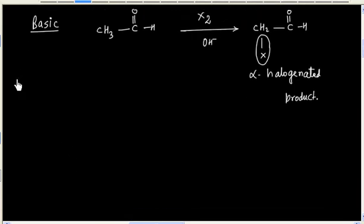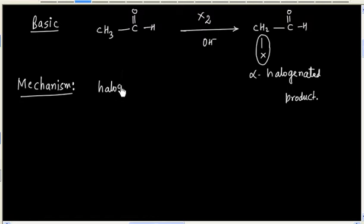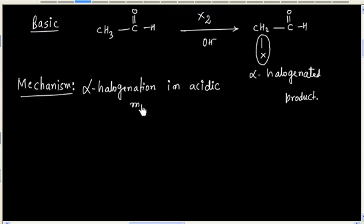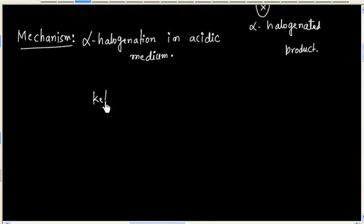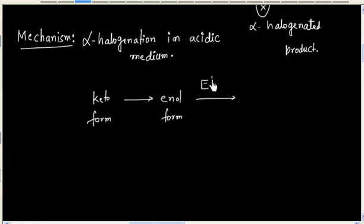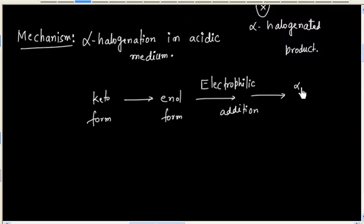Now let us discuss the mechanism of halogenation in acidic medium. This is alpha-halogenation. First, the keto form is converted into the enol form, and then we have electrophilic addition, which finally gives the alpha-halogenated product.